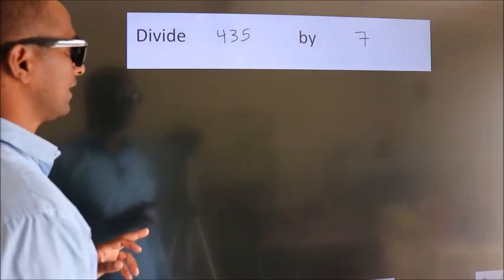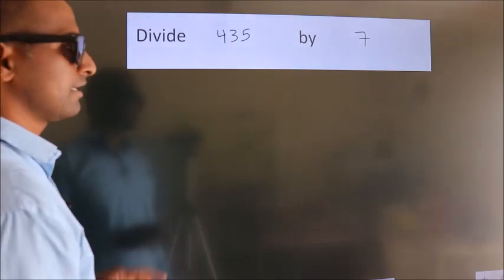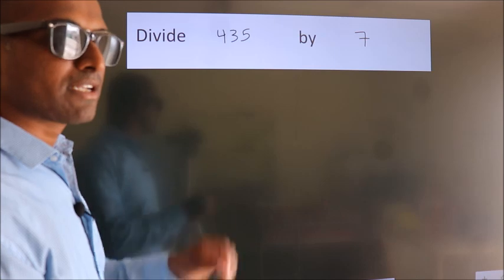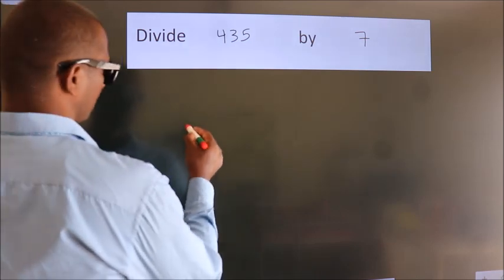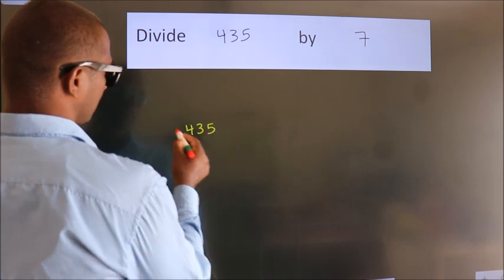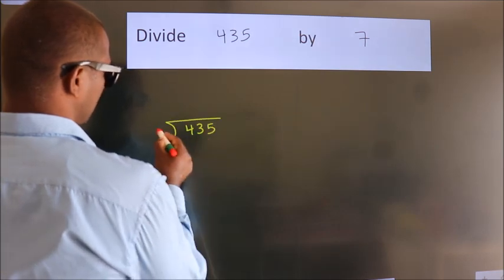Divide 435 by 7. To do this division, we should frame it in this way: 435 here, 7 here.